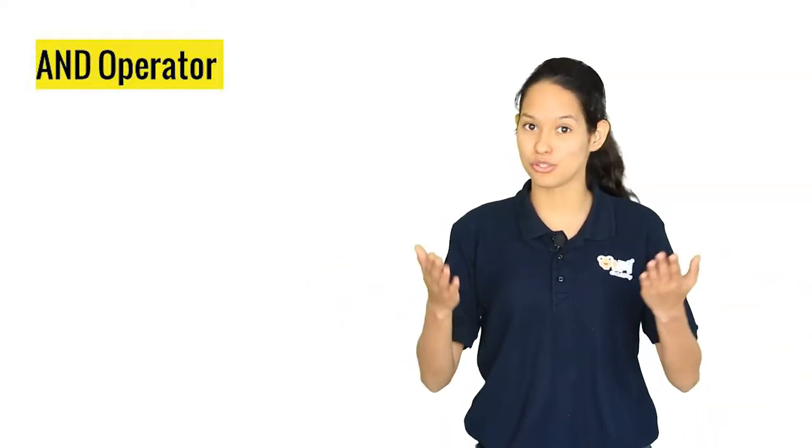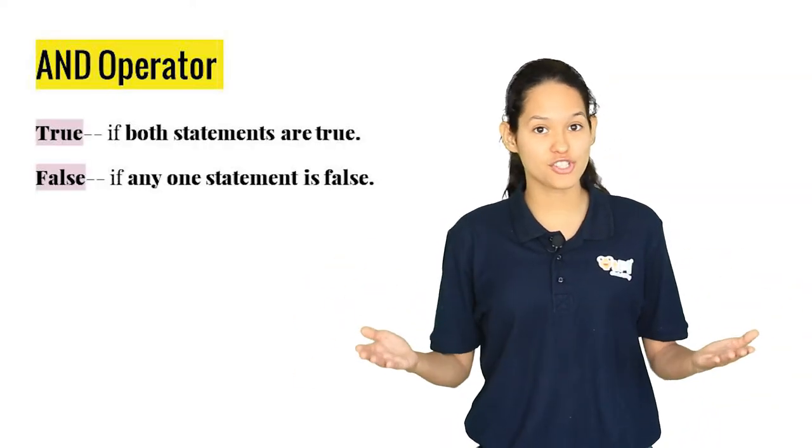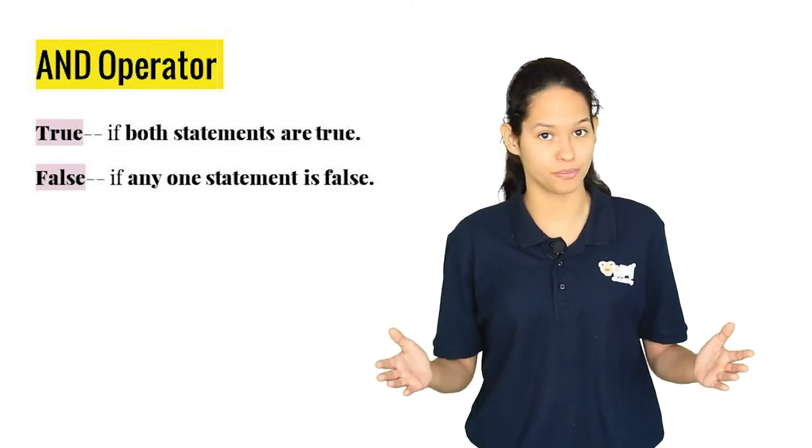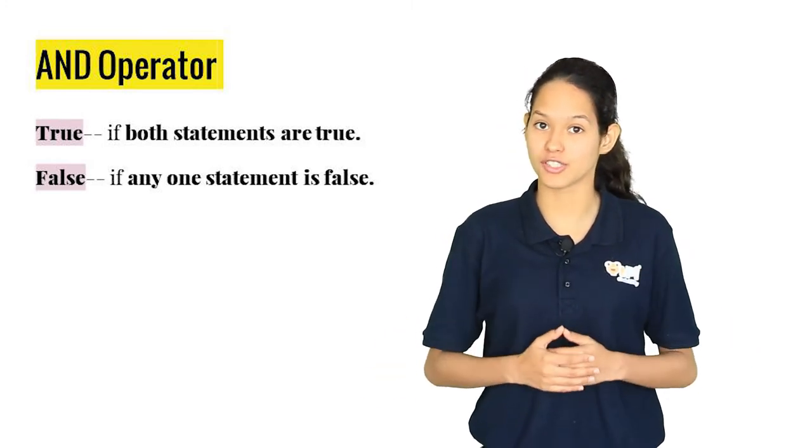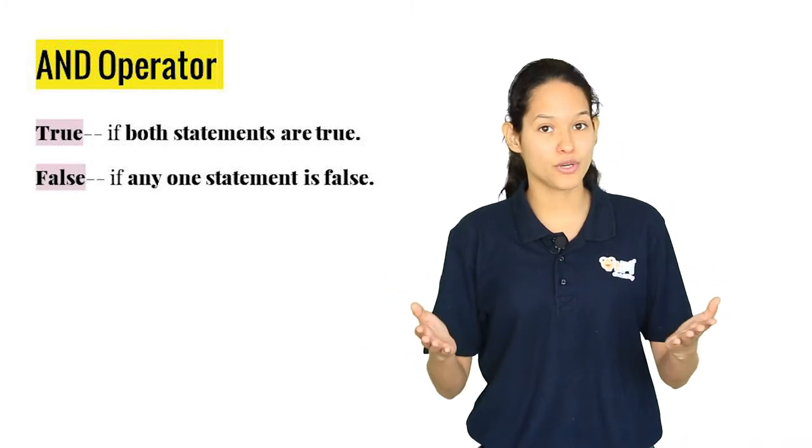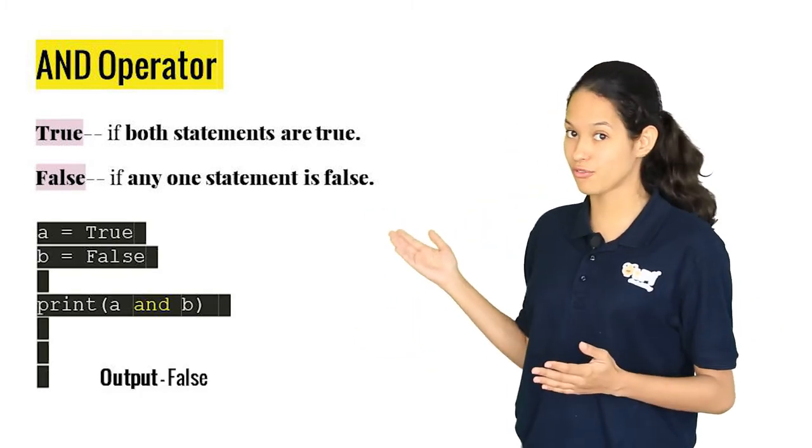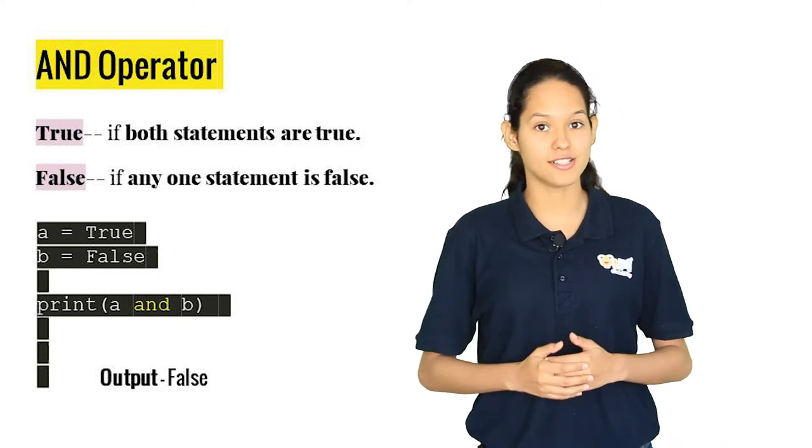The AND operator has two conditions. Both the conditions have to be true in order to get an output of true. If either one of the conditions fail, then you get an output which is false. You can try changing the values of A and B and see what results you get.